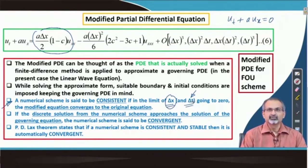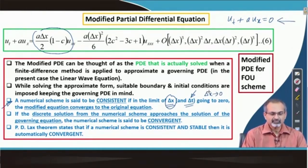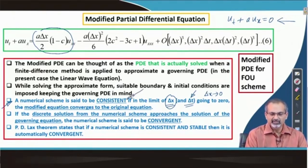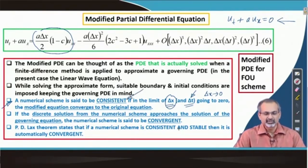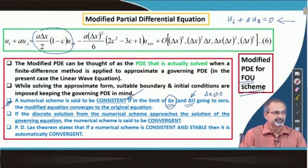As you limit delta x to 0, you are able to retrieve the original partial differential equation. If that happens, then you have a consistent discretization of the original PDE. In this case, we can confirm that the FOU scheme — the first order upwind scheme — is a consistent scheme.